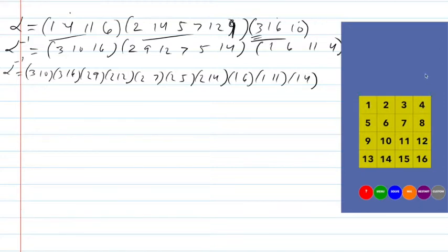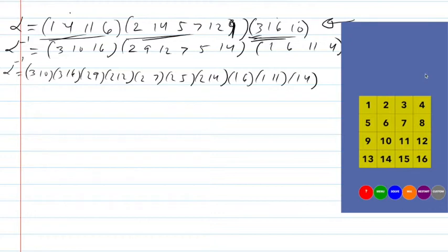And as you can see, the puzzle is all solved. What we did was take the initial state of the puzzle, wrote it as a permutation, and used the fact that the inverse of a permutation written as a composition of cycles means taking each cycle in reverse order and taking the inverse of each one.